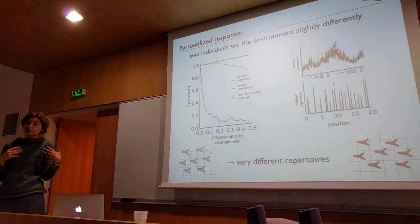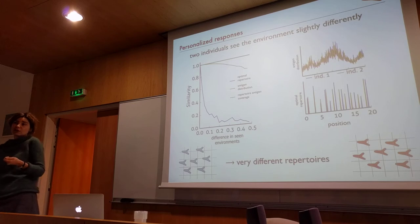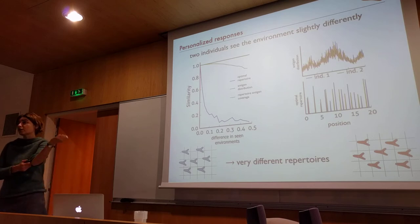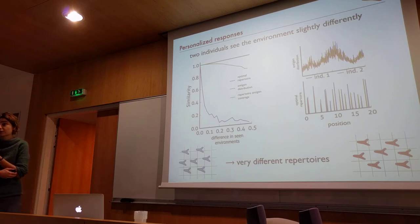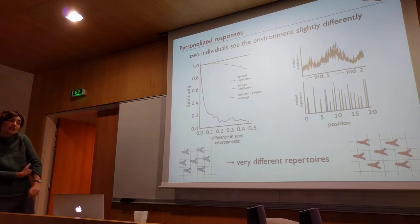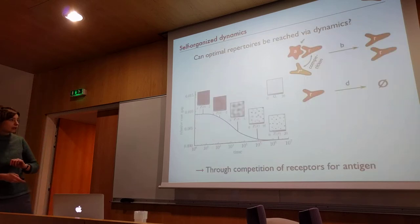We shouldn't be surprised that our immune repertoires are very different, because there are many different solutions to the same problem — and this is even in phenotypic space. The actual number of receptors shared between individuals, even twins, is very low. In a sampling of 100,000 receptors, we share around 500 — a very small fraction. So finding very different solutions to the same problem is expected, especially in sequence space where the same recognition problem has many solutions.